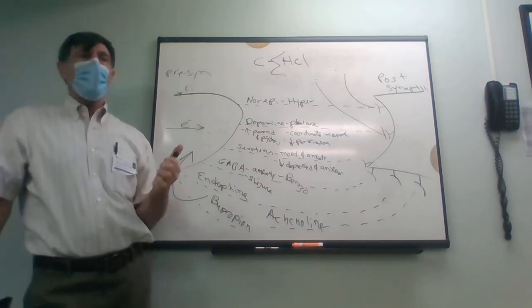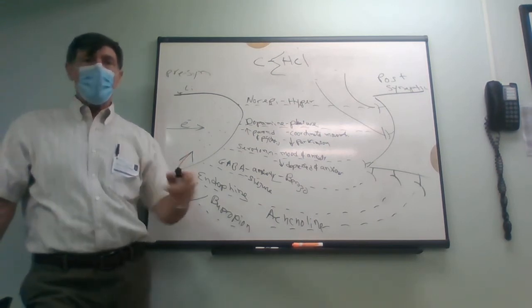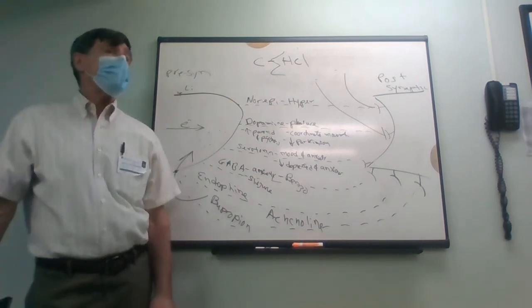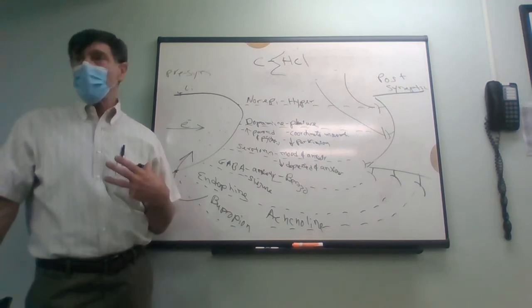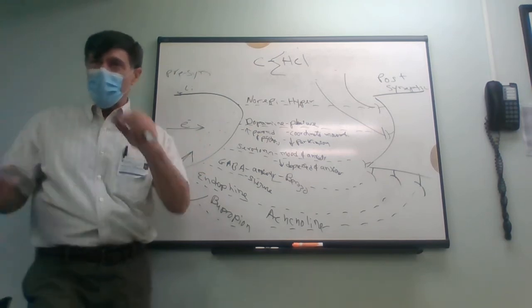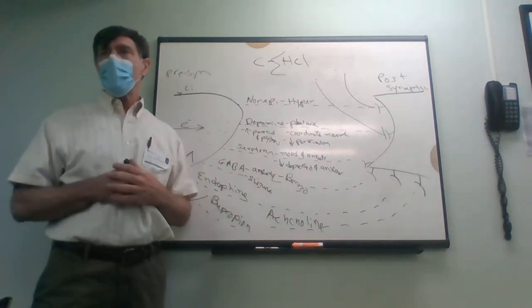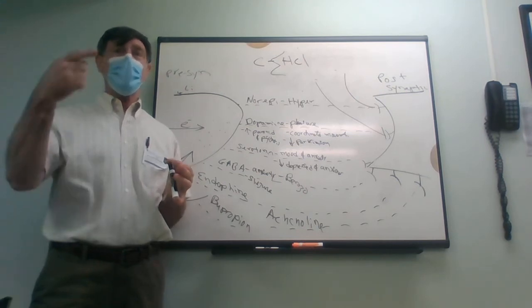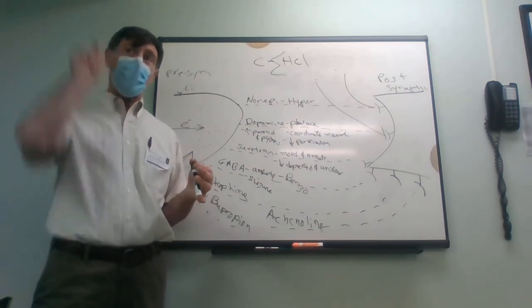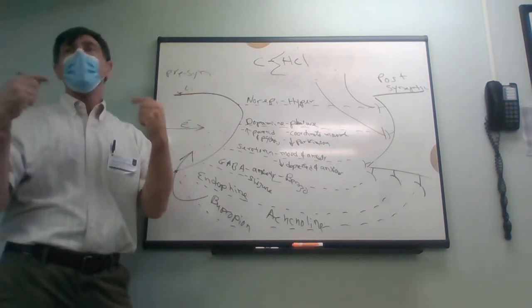Why smoke it? If you spread cocaine up someone's nose one cell layer thick, the surface area might be the size of a table. But if you spread it across someone's lungs — which are like a sponge — the surface area is the size of a tennis court to a football field. That's why smoking a drug can get so much more of it into your body quickly and shoot it right into your brain. Crack and cocaine are the same molecule — it's just how you get it into your body.